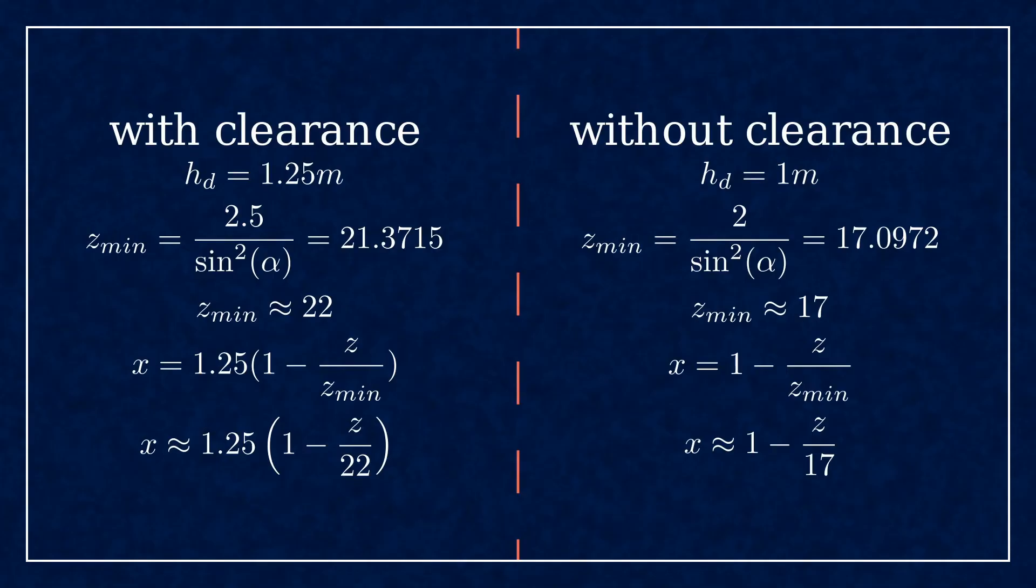Textbooks and online sources, on the other hand, seem to ignore the clearance and derive a bit simpler equations using the same methods, assuming the dedendum coefficient is 1. This leads to the minimum number of teeth without undercut to be roughly 17 instead of 22.